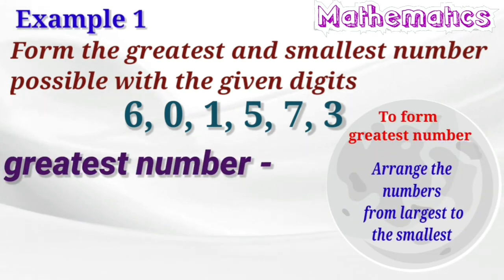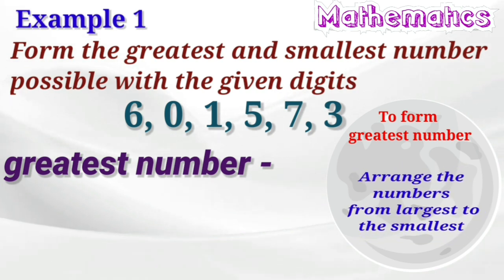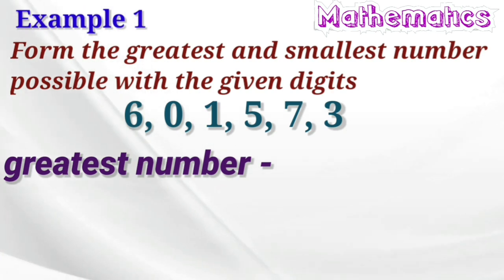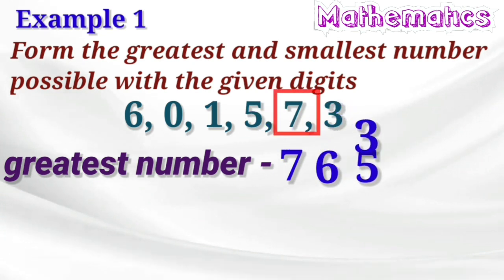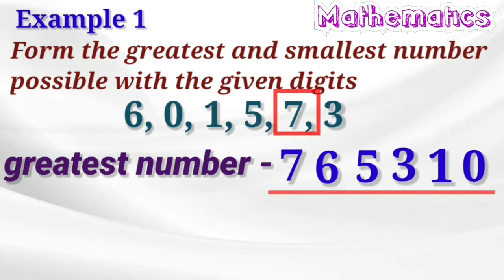arrange the digits in descending order. Arranging number from largest to the smallest is called descending order. So, first greatest digit is 7. Yehaan per sabse bada digit hai 7. 7, then 6, then 5, then 3, then 1, then 0. We make the greatest number 765310 from the given digits.